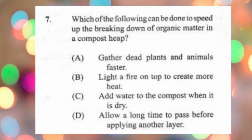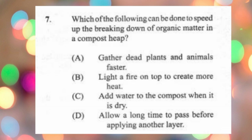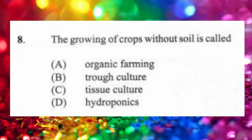Question 7: Which of the following can be done to speed up the breakdown of organic matter in a compost heap? (a) gather dead plants and animals faster, (b) light a fire on top to create more heat, (c) add water to the compost when it is dry, (d) allow a long time to pass before applying another layer. The answer is C. Water encourages the growth of microorganisms, which will break down the organic matter.